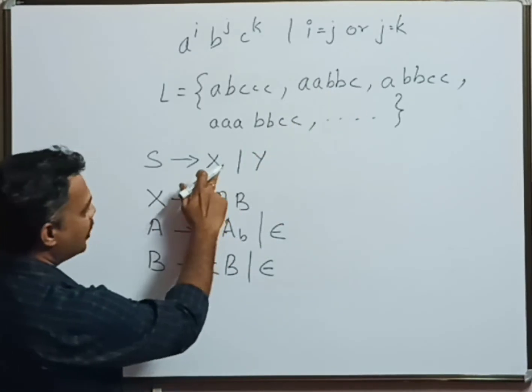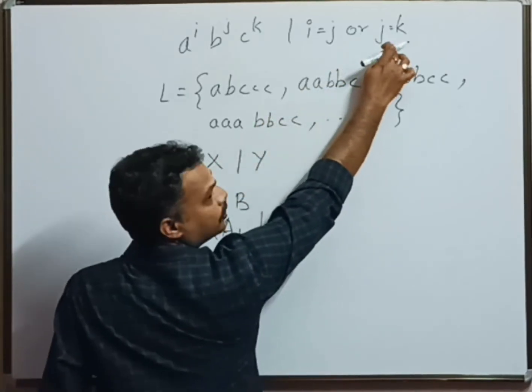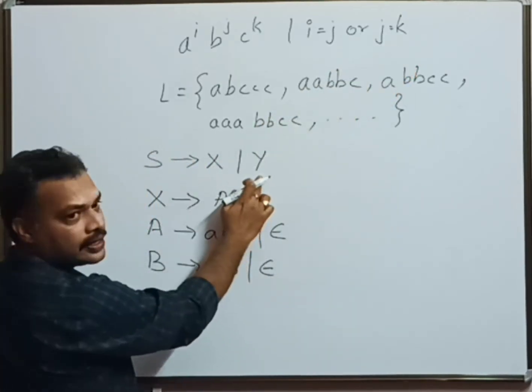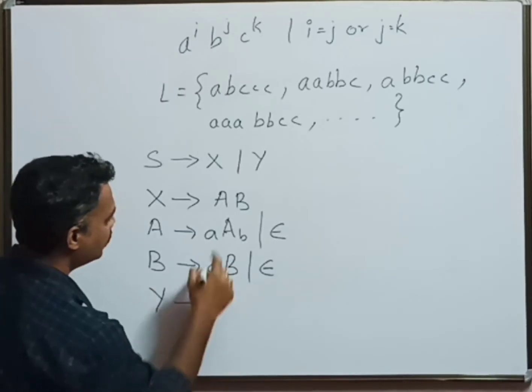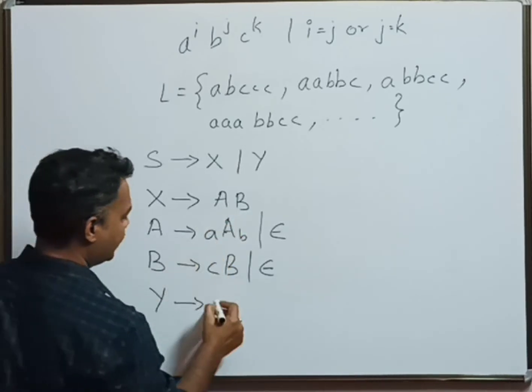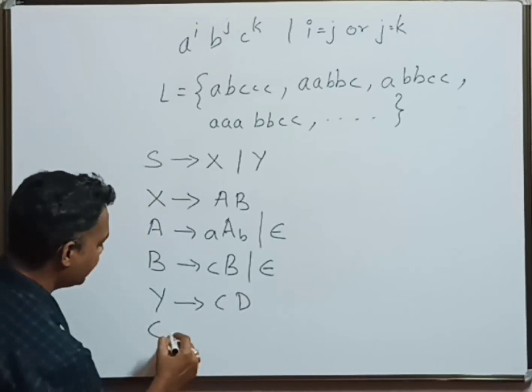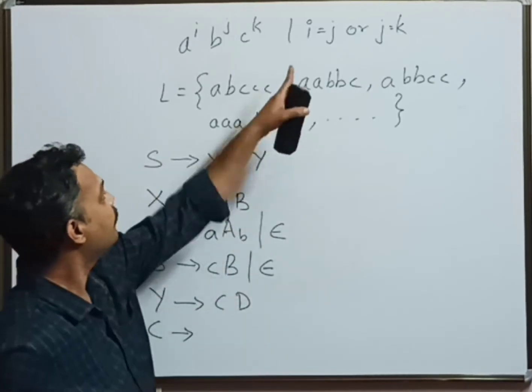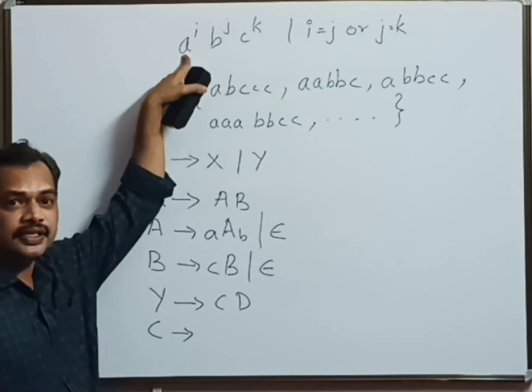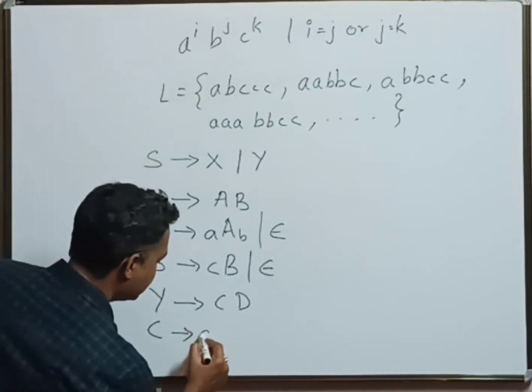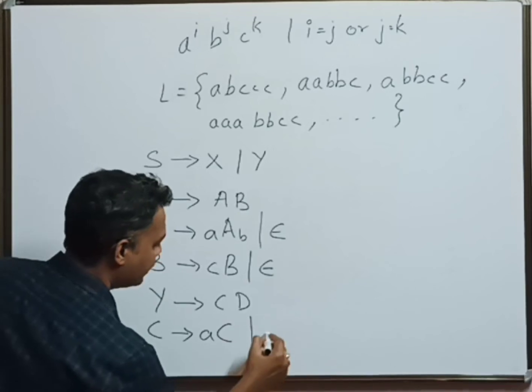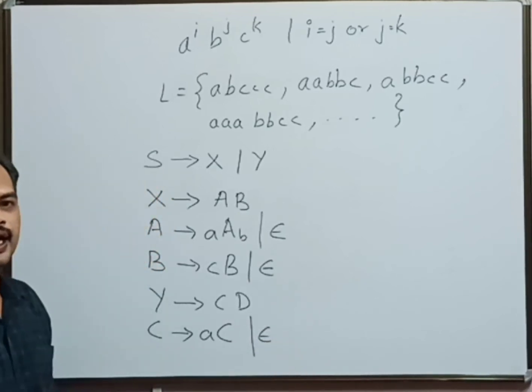Next, X part is over. Now we have to concentrate on this part, which is taken care by Y. So I will expand Y like this: Y equals CD. C will be taking care of number of occurrences of a's, which has no restriction. So it is C goes to aC, and stopped using epsilon.